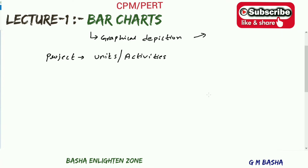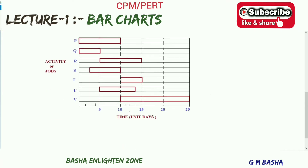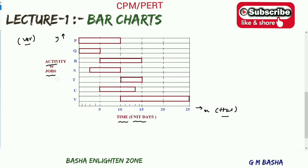A bar chart consists of two coordinate axes: a horizontal axis and a vertical axis. The horizontal axis represents time in units of days, and the vertical axis represents the jobs or activities — the well-defined, manageable units or activities that make up the project.